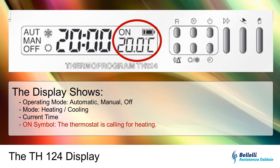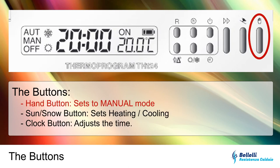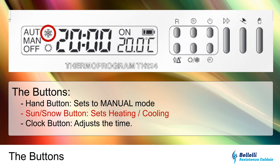The ON indication lets us know if the thermostat is currently activating the boiler for heating. Moving to the buttons, we find the hand button to switch between automatic and manual modes. The sun and snowflake buttons are used to switch between summer and winter functions. For heating we will always use the snowflake function. Lastly, the button with the clock symbol allows you to adjust the time.